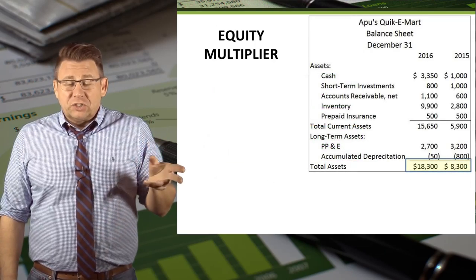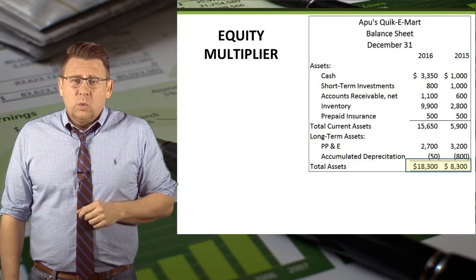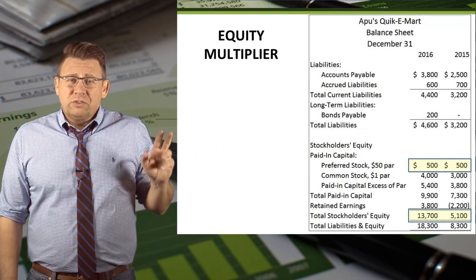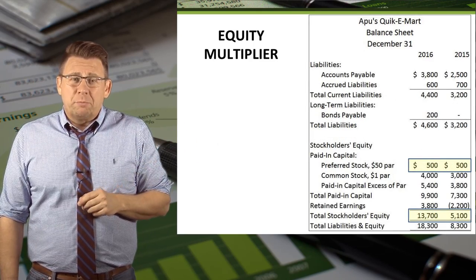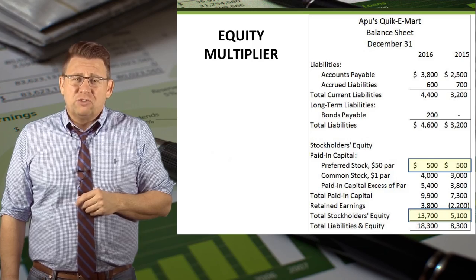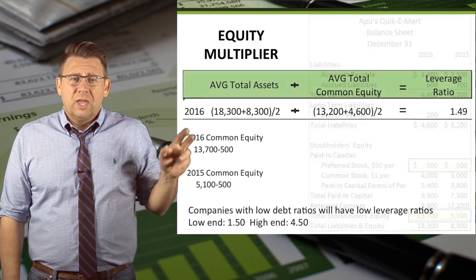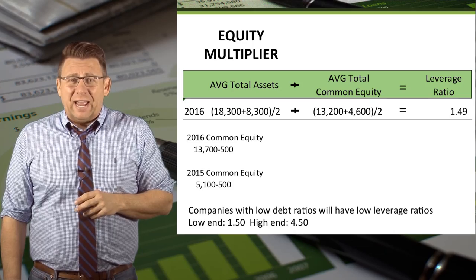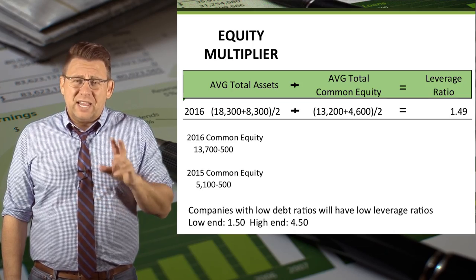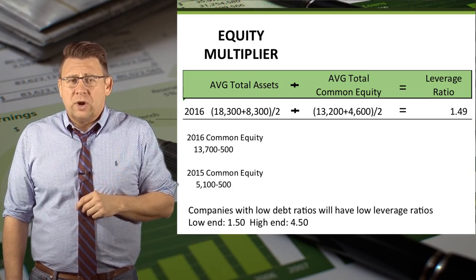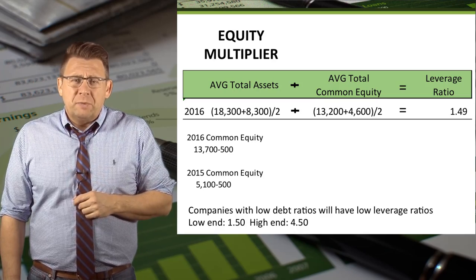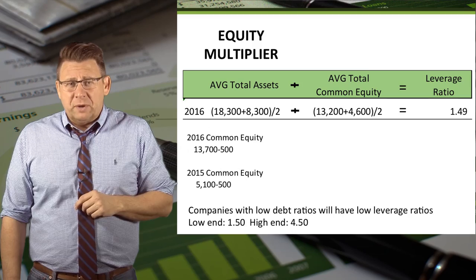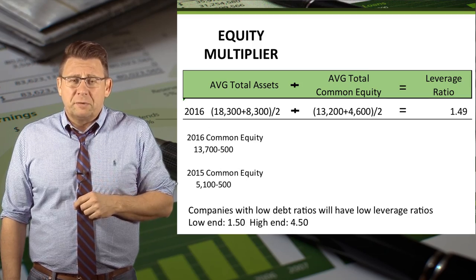Here is a balance sheet from our sample company. We'll use the highlighted total assets to determine the equity multiplier, and the highlighted total equity and preferred stock to determine the average common equity. For 2016, the average total assets divided by average common equity gives us an equity multiplier of 1.49, which is on the low side. This means that this company doesn't use debt financing very much as a way to improve profitability.